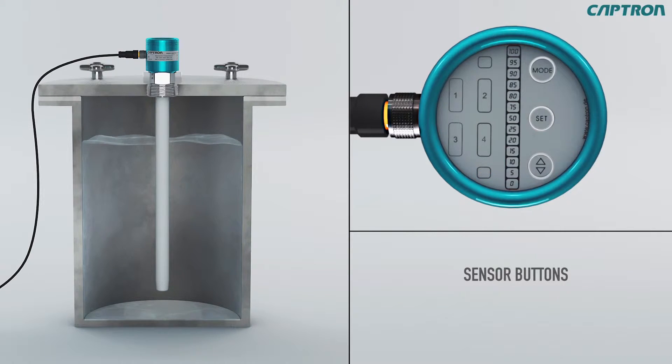The sensor buttons for operation include the mode button, with which you can reach the next set point without overwriting already saved settings.